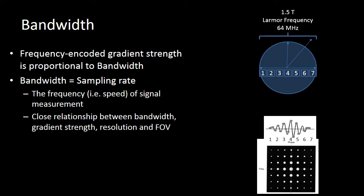When we think about creating an image on a 1.5 Tesla magnet, we have an assumed Larmor frequency of 64 megahertz. Within our gradient we are actually going to have a slightly different Larmor frequency depending on the location of the protons.